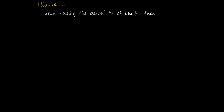As an illustration, consider the following problem. Show, using the definition of a limit, that the limit as x approaches 1 of 3x minus 3 divided by the square root of x minus 1 equals 6.